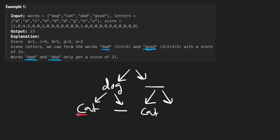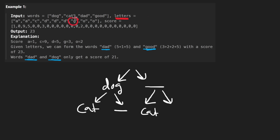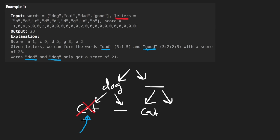How do we know we can't form 'cat'? We check: do we have enough C characters available, enough A characters, enough T characters? Generally the easiest way to do that is to take the letters input and convert it into a hash map so we can get the quantity of each character. Then we do the same thing for the word 'cat' — get the frequency of every character — and check if we have enough of each. If we don't, we don't go down that path. To do that operation we have to iterate over the current word, which is why pre-computing scores doesn't meaningfully change the big O complexity.